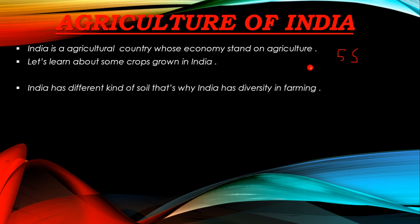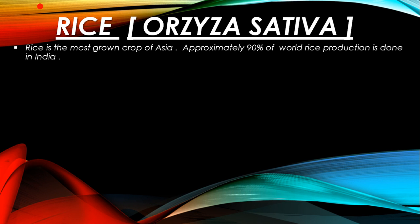India has different kinds of soils, which is why India has diversity in farming. Now we will talk about rice. The scientific name of rice is Oryza sativa. Rice is the most grown crop in India. Approximately 90% of world rice production is done in Asia.